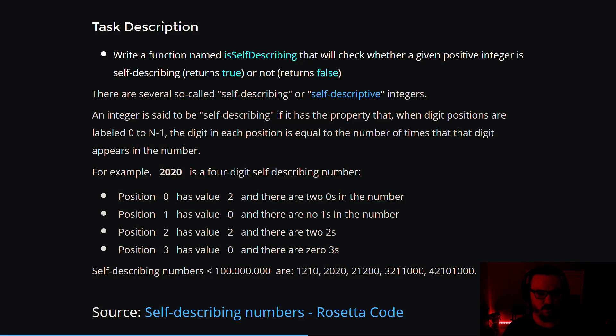We move on to the next position, two, which has a value of two, and that tells us that there are two of the number two in this number. Well, 2020 has two twos in it, so that checks out as well.